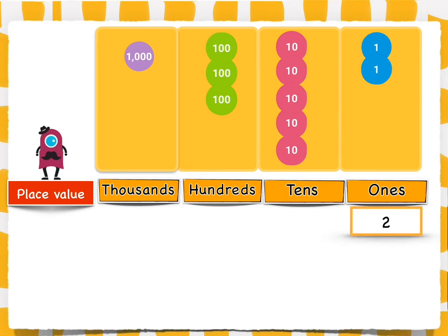How many tens do we have? We have five tens. How many hundreds are there? There are three hundreds.